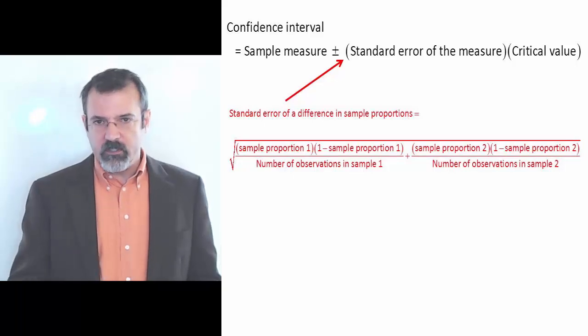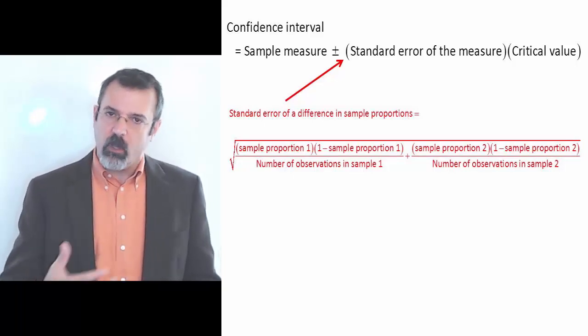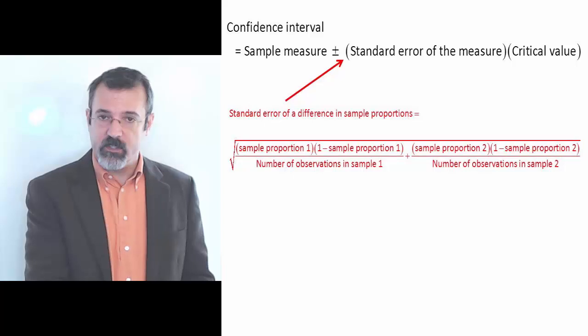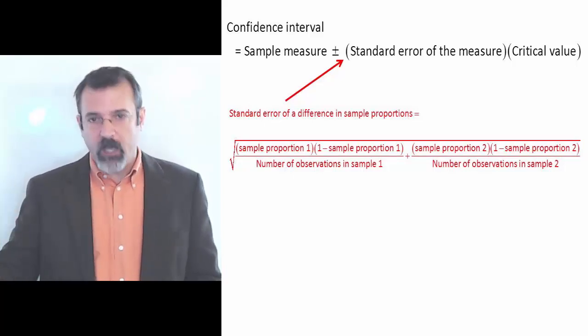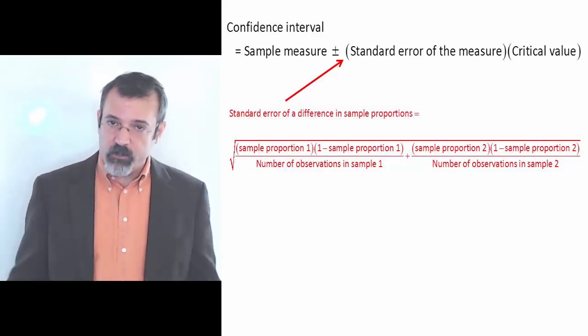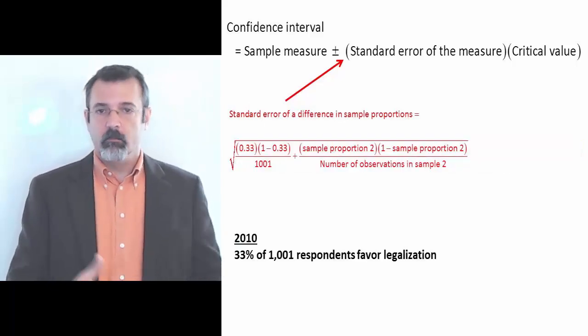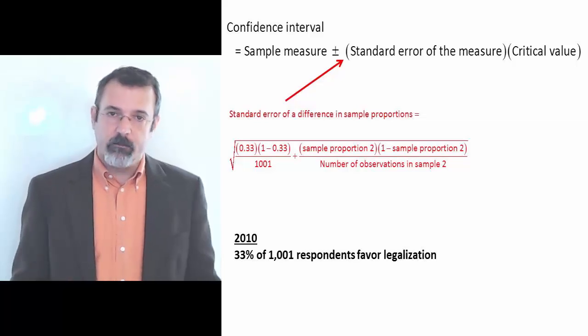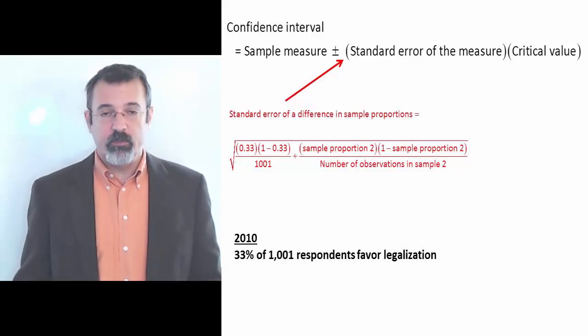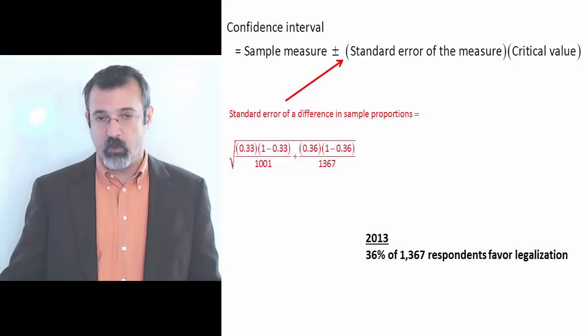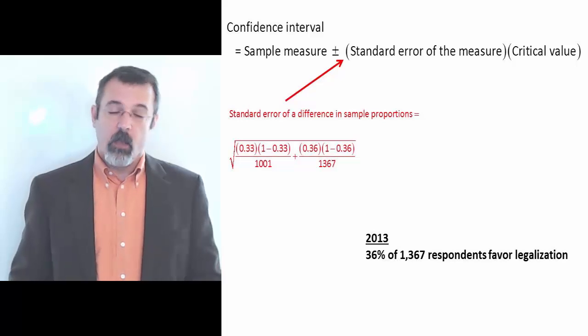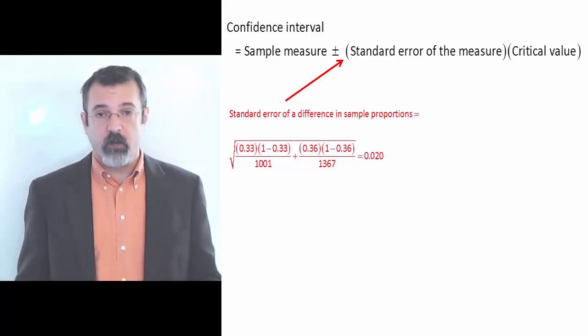The standard error of a difference in sample proportions is the square root of the first proportion multiplied by 1 minus the first proportion divided by the number of observations in the sample, plus the second proportion multiplied by 1 minus the second proportion divided by the number of observations in that sample. In this case, our first sample was in 2010. The sample proportion is 0.33 multiplied by 1 minus 0.33 and divided by the number of observations in our 2010 sample, 1,001. Our second proportion comes from the 2013 sample. This is 0.36 times 1 minus 0.36 divided by the number of observations in the second sample, 1,367. Plugging these numbers into our formula gives us a standard error of 0.02.